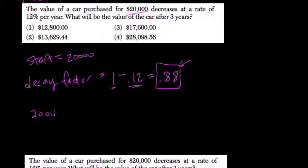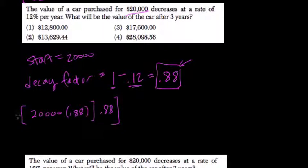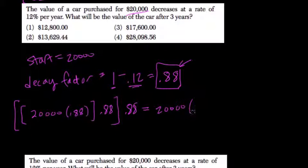So what's nice about this is you could do 20,000 times 0.88 for one year and then times that by 0.88 again and then times that by 0.88 a third time for three years. Or you could compound this quickly by doing 20,000 times 0.88 to the third power.